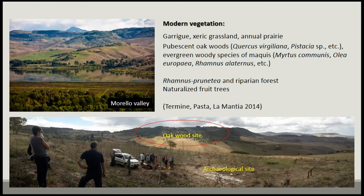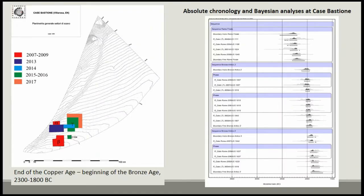As Enrico already told us this morning, Case Bastione is a site covering about 500 years, from the second part of the second millennium BC until the beginning of the first millennium BC. Several field campaigns have been completed, including one that finished one month ago when we completed our archaeobotanical sampling. Thanks to several C14 dates, we have a quite reliable chronology, which is also important for the wood charcoal segments.